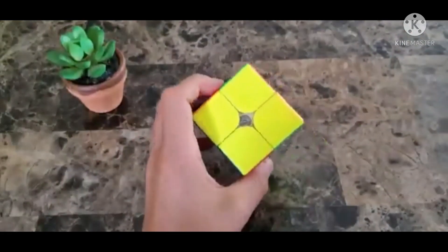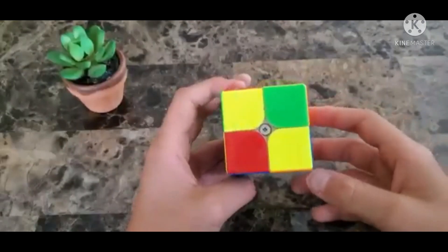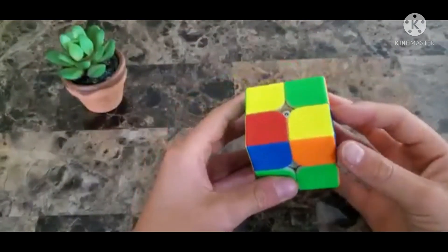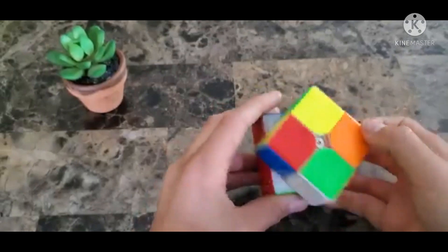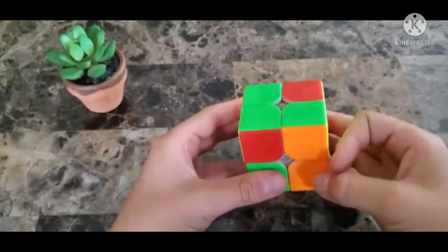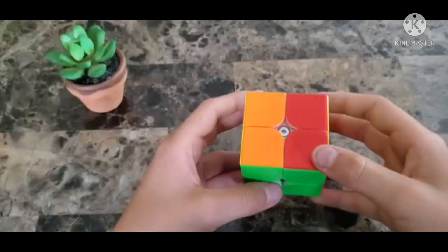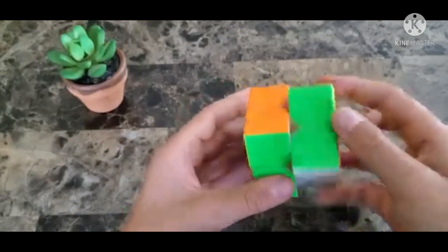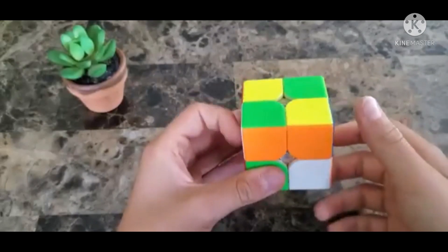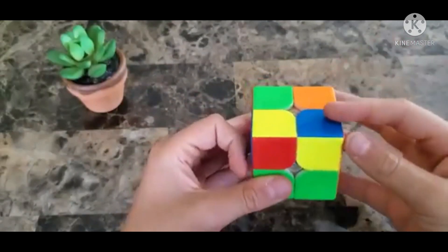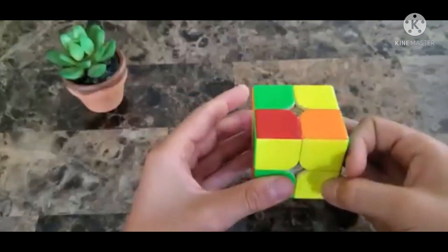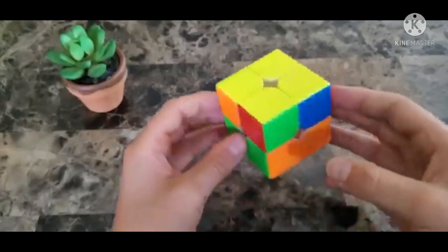Or at least the top. And then lastly when we have the diagonal pieces you're gonna hold it like this and do this algorithm. Then you'll have no pieces. You just do it again. One. And there you go.